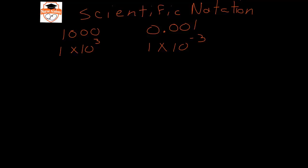If we're looking at a number that is in scientific notation, if the exponent is a positive value, that means the overall number we're writing in scientific notation is larger than one. If there's a negative sign, that means the value in normal notation is smaller than one. This sign is extremely important.